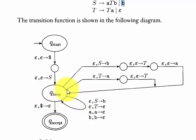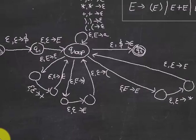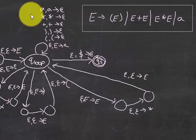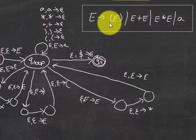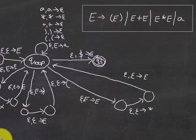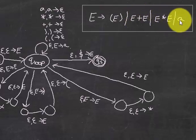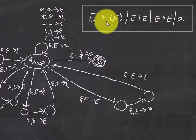This might not be fully clear from the first example, so let's look at another. The production is: E goes to E+E, or (E), or E*E, or A, where E is the start symbol and the only variable. The terminals are parentheses, the plus operator, asterisk, and A. E is the variable.